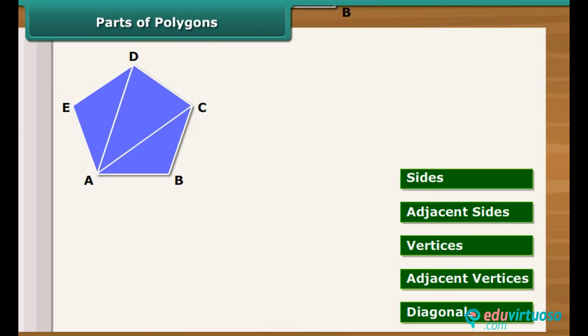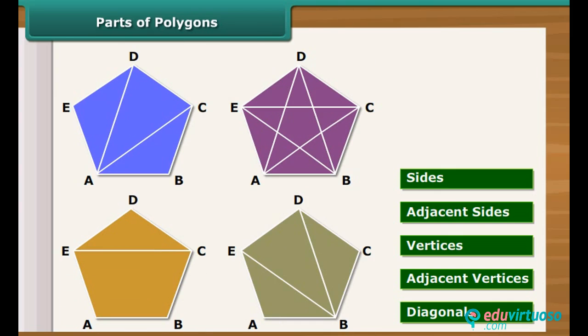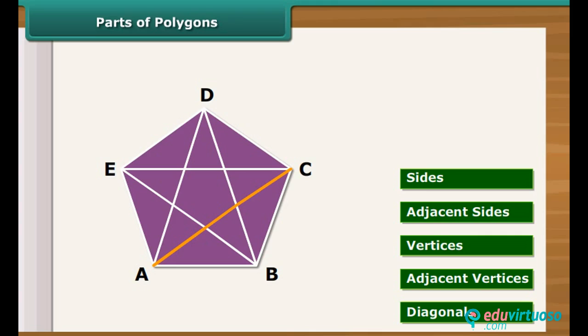Line segments joining non-adjacent vertices are called diagonals of the polygon. For example, AC, AD, BD, BE, CE are diagonals of the given polygon.